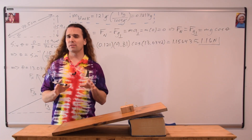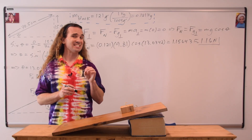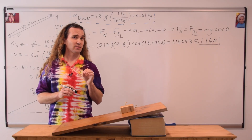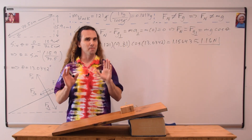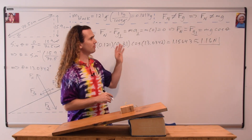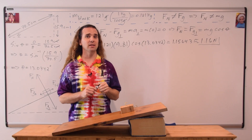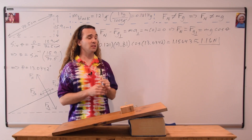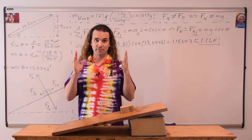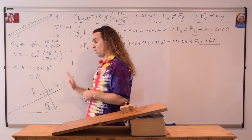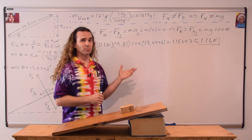Notice how the force normal does not equal the force of gravity, which means it does not equal mass times the acceleration due to gravity. I know many times before the force normal was equal to mass times the acceleration due to gravity. However, that is clearly not always true. In order to find the force normal, you have to draw a free body diagram and sum the forces.